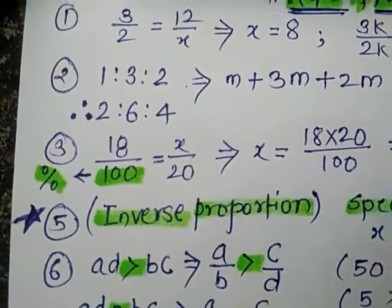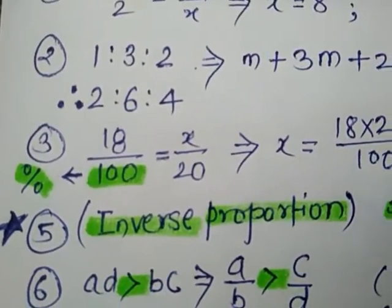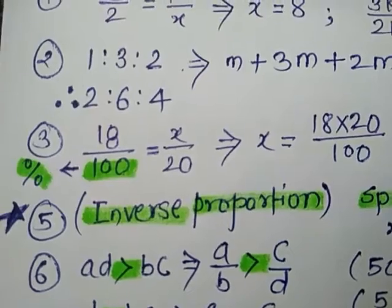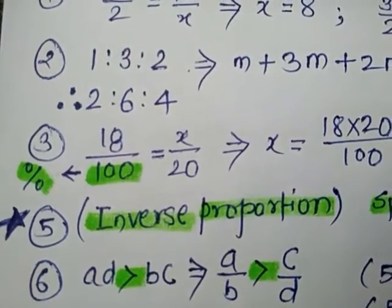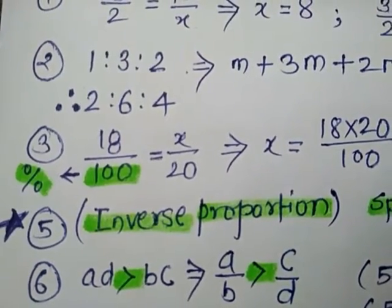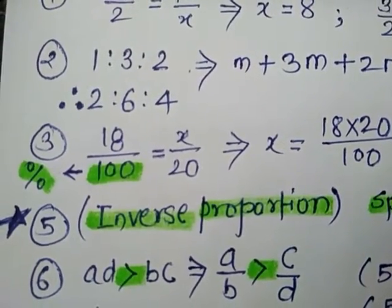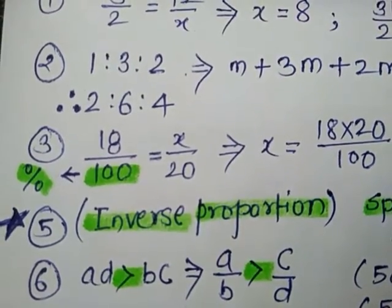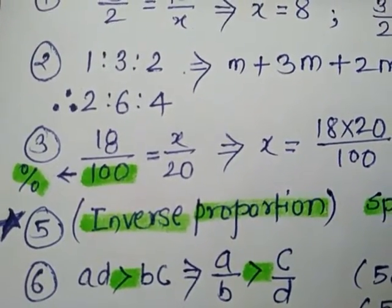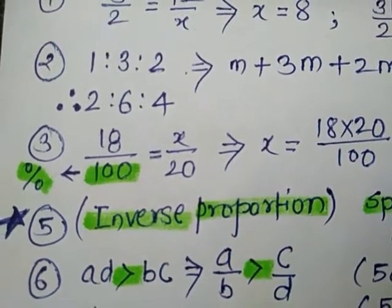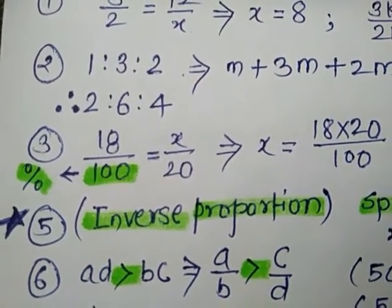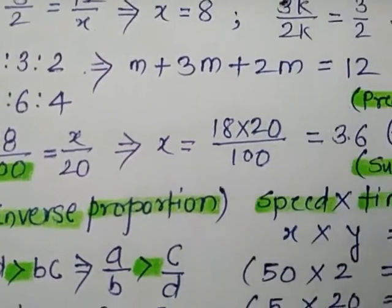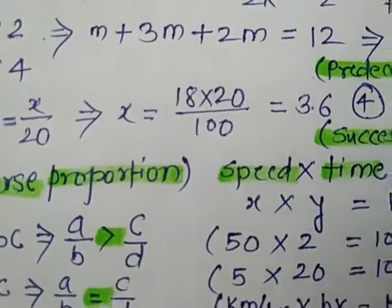While writing in percentage, we divide the number by 100. That is 18 percent, written as 18 divided by 100 is equal to X by 2. So we can find out the number X is equal to 3.6.